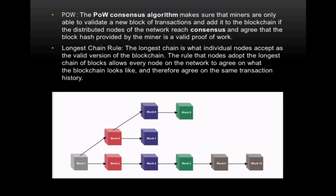The Proof of Work (PoW) consensus algorithm ensures that miners are only able to validate a new block of transactions. In PoW, the consensus is based on proof that a miner has done significant computational work to solve a particular hash, achieve the required difficulty, and find the correct nonce. It shows their nodes have worked hard to produce the block hash.